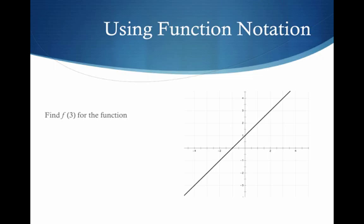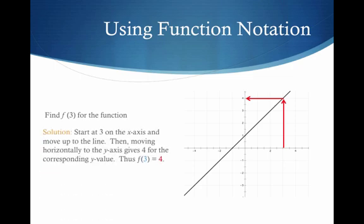What about f of 3 when I give you a graph? What the heck are you going to do? Notice I start at 3 on my x-axis and I go up to where I touch my function. And then I go over to my y-axis to see what y I'm getting when x is 3. And the answer is 4. So f of 3 is simply 4.